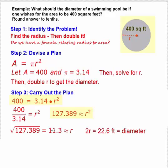Now to solve this algebraically, we extract square roots, or square root both sides, and we get √127.389 = 11.3, and that's the value for r.